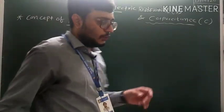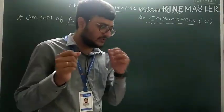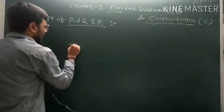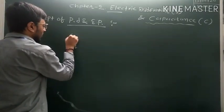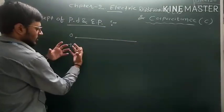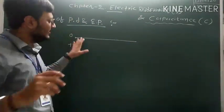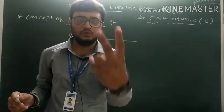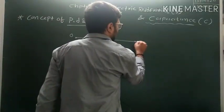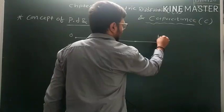Now we see the concept of potential difference and electric potential. We have one charge located at some point, suppose O. It produces an electric field radially outward. In this electric field, we assume two points, A and B.